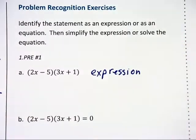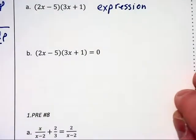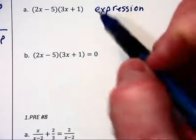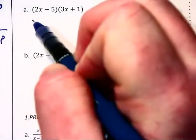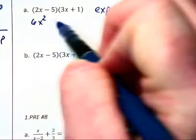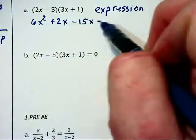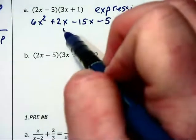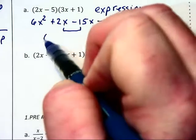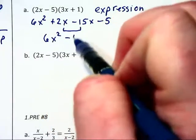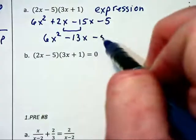Since it is an expression, we want to, in this case, FOIL the two binomials together. This will give us 6x² + 2x - 15x - 5, and the middle terms can be combined together so we will have 6x² - 13x - 5.